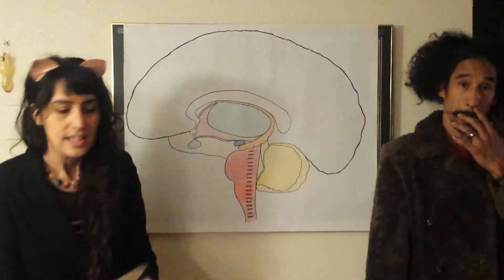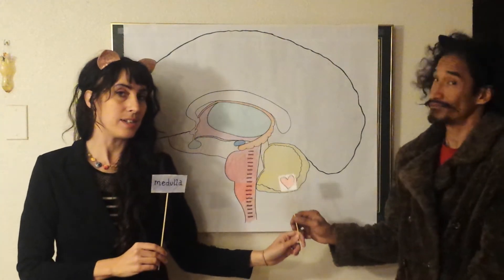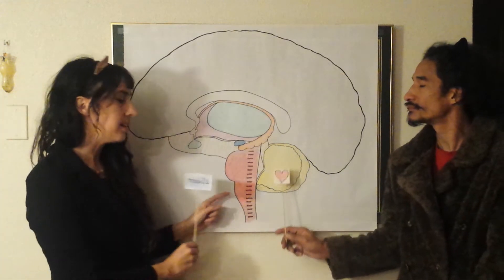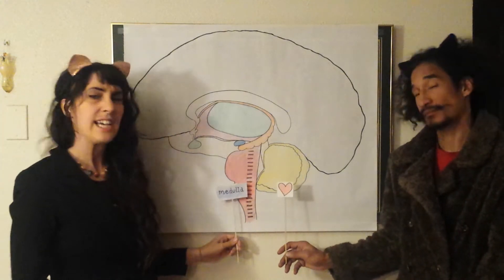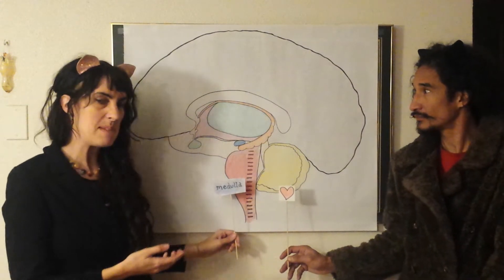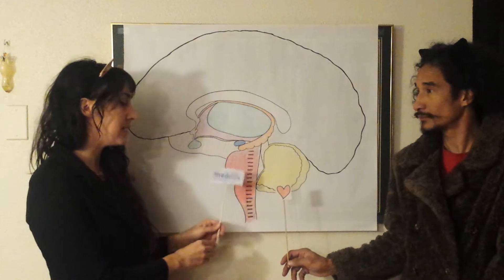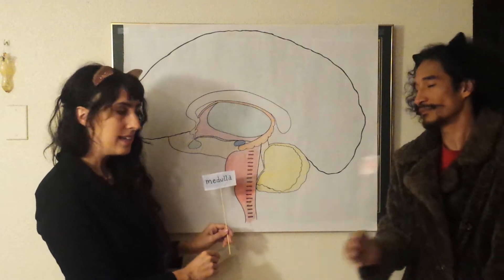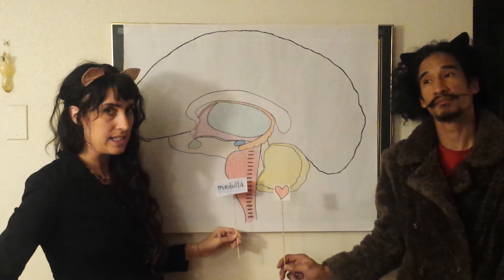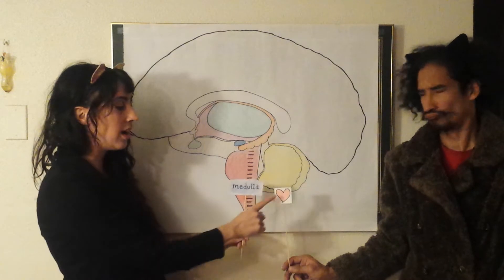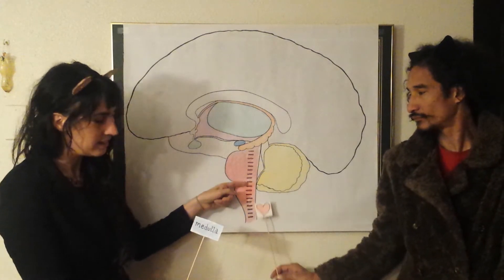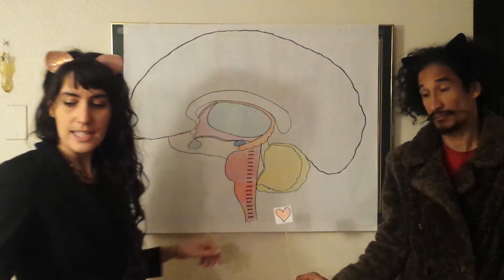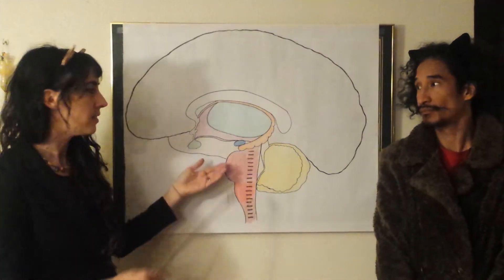Part of the pons has a different color to it — this is called the medulla. What it looks like is the word 'meddle,' like meddling — but this isn't anything we'd want meddled with. The medulla is responsible for things like the heart: circulation, heartbeat, and respiratory systems. No meddling with the medulla — we heart the medulla.